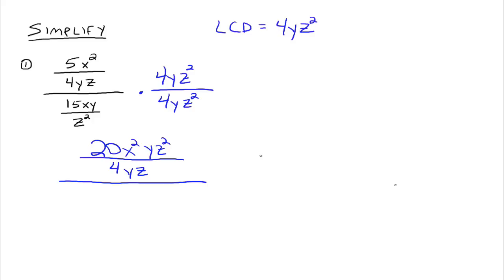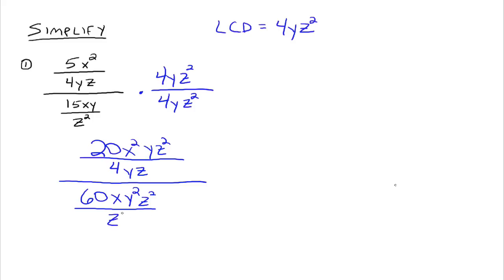And then in the denominator of the bigger fraction, we have 4yz squared times 15xy over z squared. So what happens there? We have 4 times 15, which gives you 60. We have x, y times y gives you y squared, all over z squared.